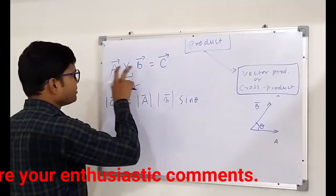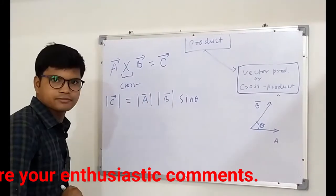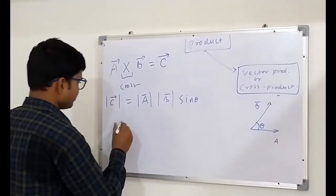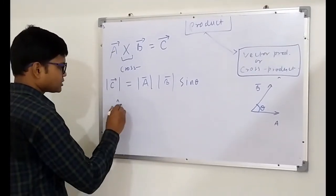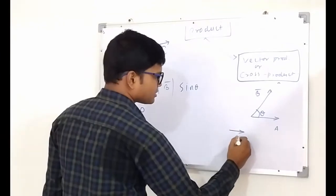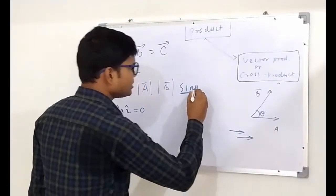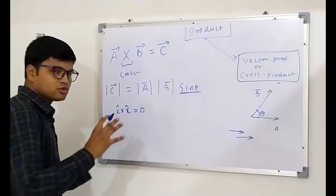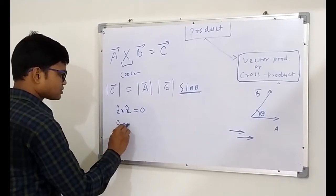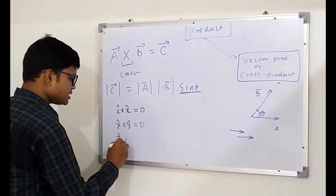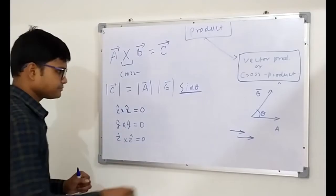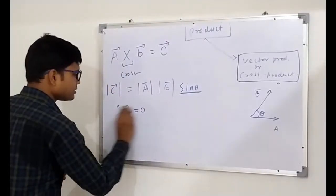Similar to the dot product situation, if we have two vectors like x-hat cross x-hat, it will always give you zero. Because these two are in the same direction, theta is zero, and sine of zero is zero. So any two identical vectors crossed together give zero. Similarly, y-hat cross y-hat gives zero, and z-hat cross z-hat gives zero in three-dimensional space.